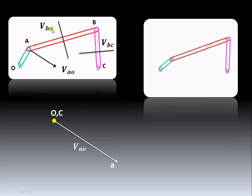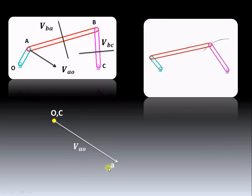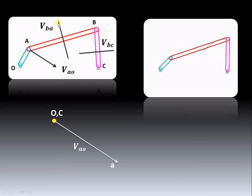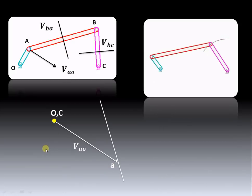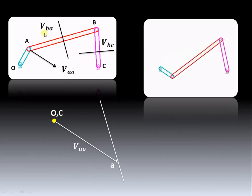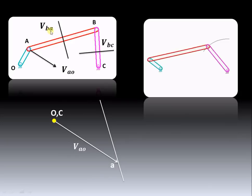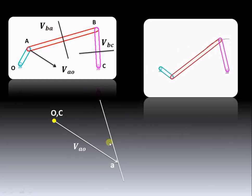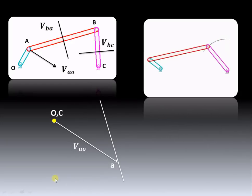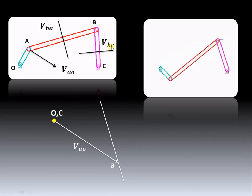Now move to the next part: velocity of B with respect to A. Out of B and A, point A is known, so from point A draw a line perpendicular to link AB. We don't know the magnitude and direction of this velocity of BA, so just draw a line in that direction.